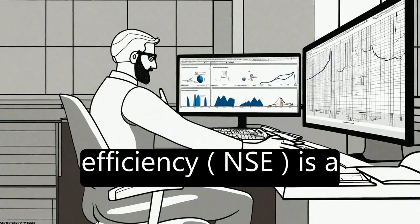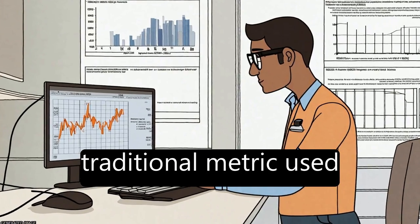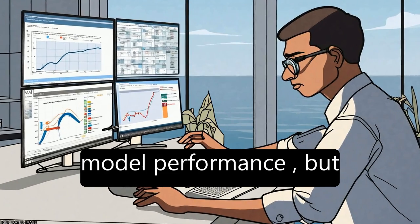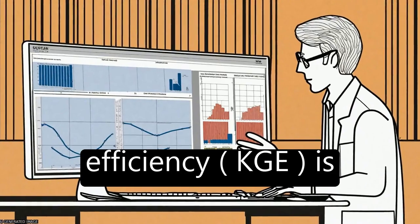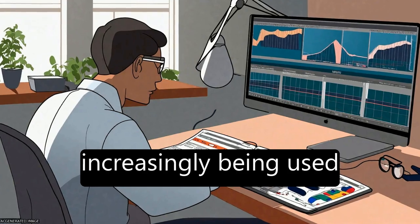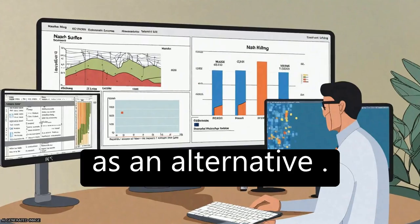The Nash-Sutcliffe efficiency, NSE, is a traditional metric used in hydrology to evaluate model performance, but the Kling-Gupta efficiency, KGE, is increasingly being used as an alternative.